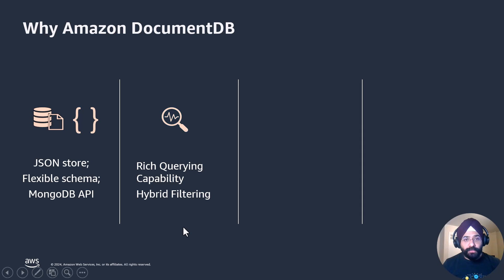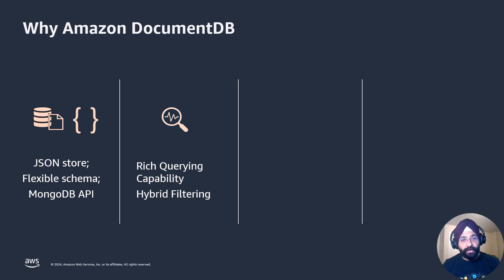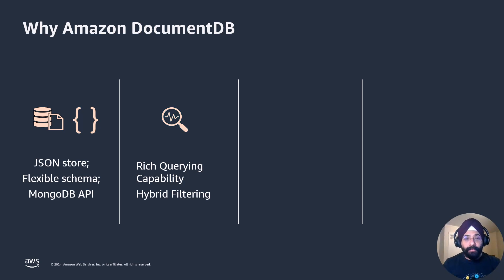Second, as we also saw briefly in the demo, DocumentDB has a rich aggregation pipeline. A lot of times your best results won't be just semantic search or just text search — it will be a combination of both or a combination with other traditional indexes. DocumentDB has rich querying capability and aggregation pipeline, so you can create different stages to filter your documents and reach the best results.